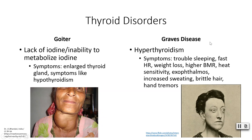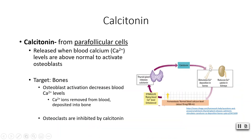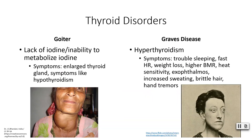Graves' disease is hyperthyroidism — too much thyroid hormone. Patients suffer from sleep troubles, increased heart rate, weight loss, elevated BMR, and heat sensitivity. The higher BMR means they produce more heat through metabolic processes and overheat more quickly. Additional symptoms include increased sweating, brittle hair, hand tremors, and exophthalmos — where the eyeballs tend to protrude more than normal.